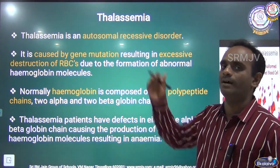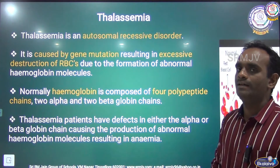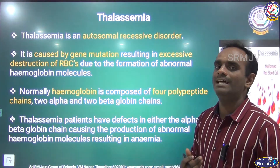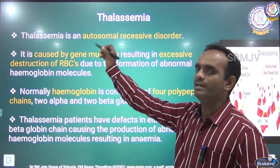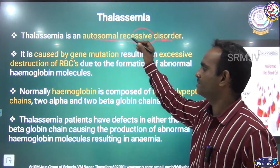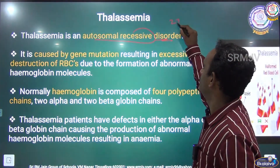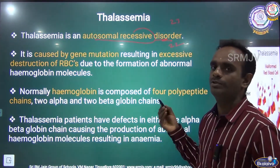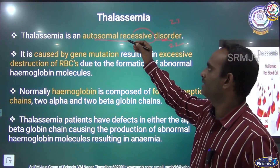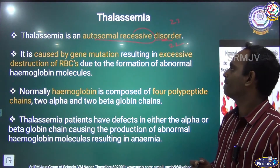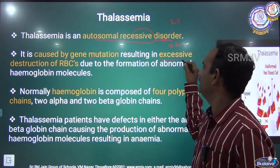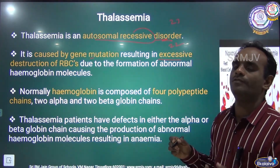Among these examples, we will see the first one — thalassemia. Thalassemia is a Mendelian disorder. Thalassemia is an autosomal recessive disorder. Among the 23 pairs, 22 pairs are autosomes, so this type of disorder comes under autosomal recessive disorder. It is caused by gene mutation resulting in excessive destruction of RBC.